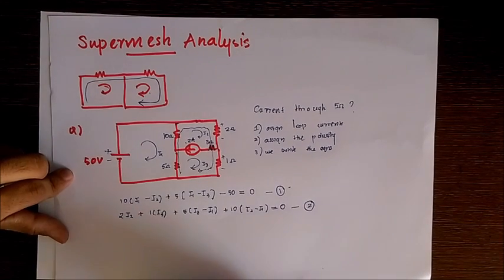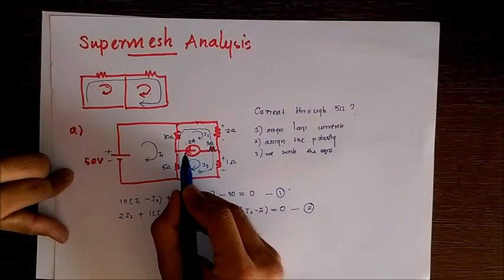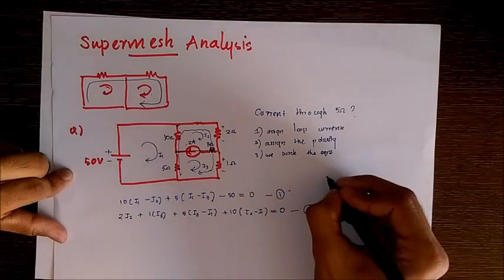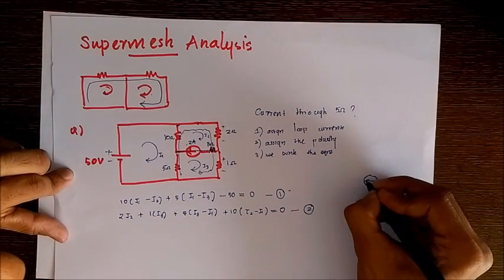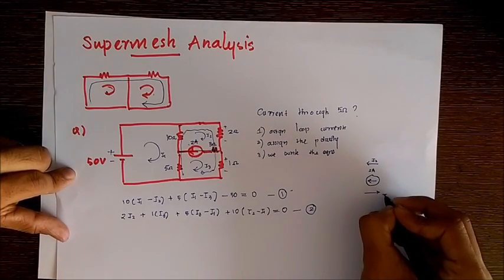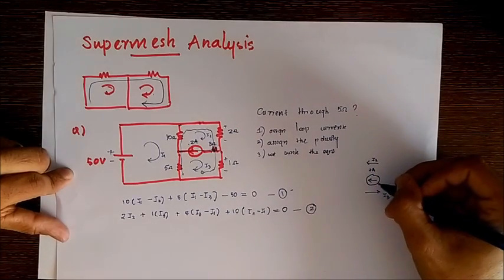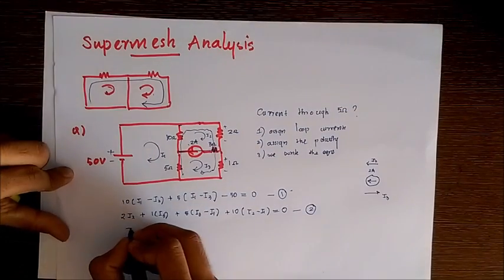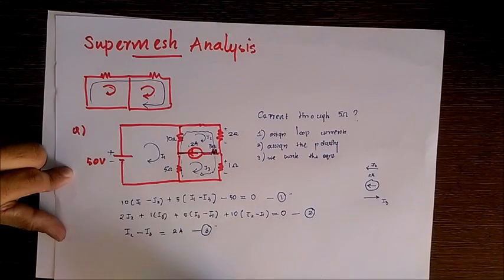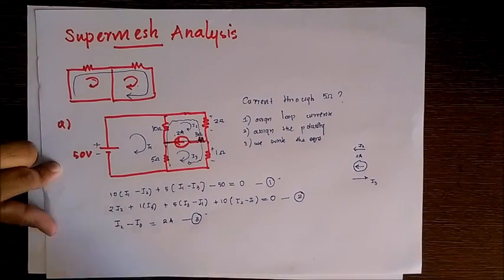We now have two equations in three variables, so we need one more equation. We consider the branch that we avoided when forming the super mesh — the current source branch. This is a 2-ampere current source. Since i2 flows in its direction and i3 flows against it, i2 has dominance as the net current is in i2's direction. So we write: i2 minus i3 equals 2 amperes.